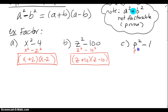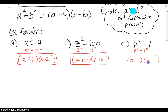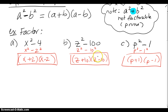For p squared minus 1, you can always think of 1 as 1 squared because 1 squared is still 1. Again, we put one of each — p and 1, p and 1 — and then plus and minus, or minus and plus. The order does not matter. Difference of squares are very quick factoring problems.